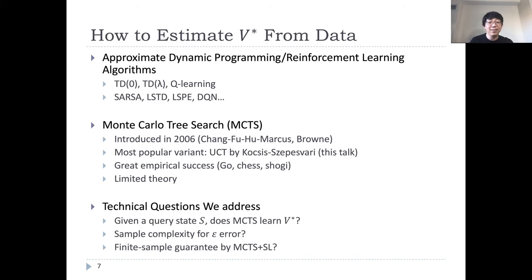Technically, given a query state S, we would like to know whether MCTS, when properly designed, learns the optimal value of the query state or not. And if so, how many samples are required to learn a value for a fixed epsilon error? Finally, when coupled with sound supervised learning methods, can we obtain epsilon error for the entire state space? And also, how does the sample complexity scale with the desired error?